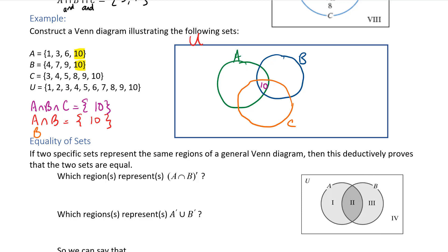Now for B intersect C: comparing those sets, 4 and 9 are common (along with 10, which is already placed). So B intersect C contains 4, 9, and 10. Since 10 is already in the center, I place 4 and 9 in the region that is in both B and C but not in A.